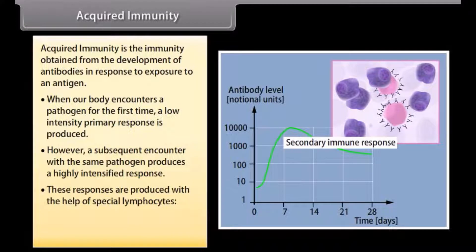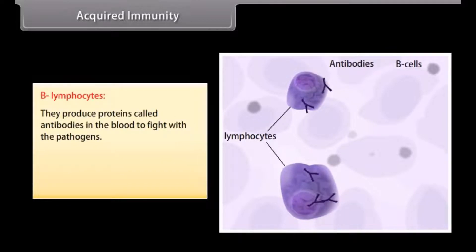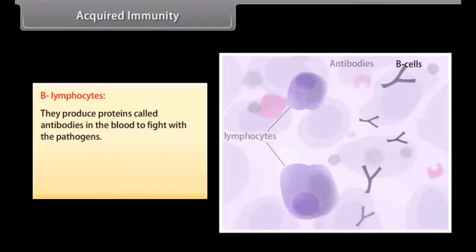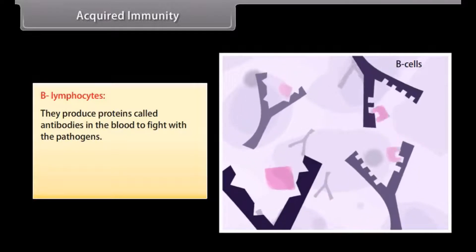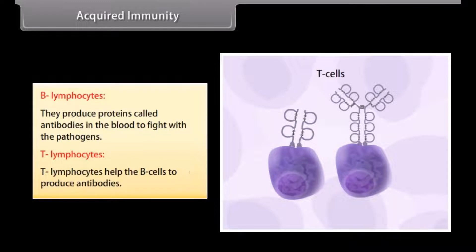These responses are produced with the help of special lymphocytes: B lymphocytes and T lymphocytes. B lymphocytes produce proteins called antibodies in the blood to fight with the pathogens. T lymphocytes help the B cells to produce antibodies.